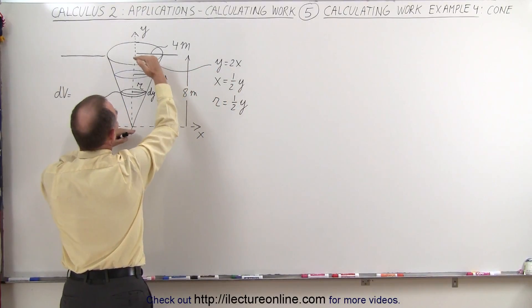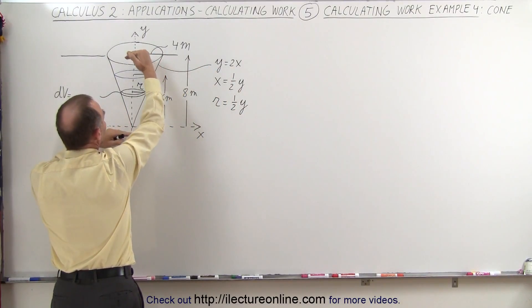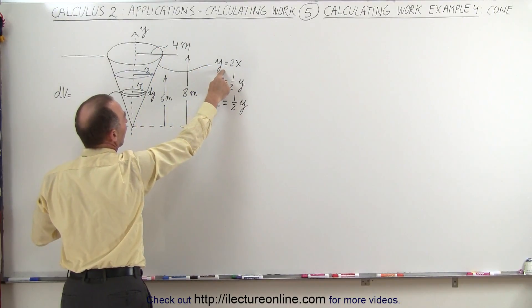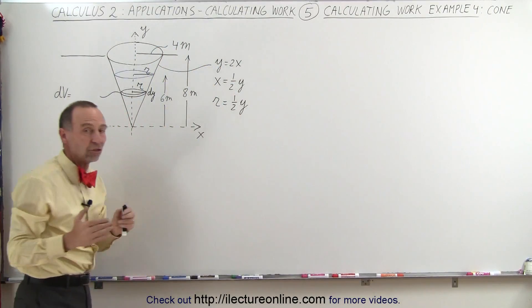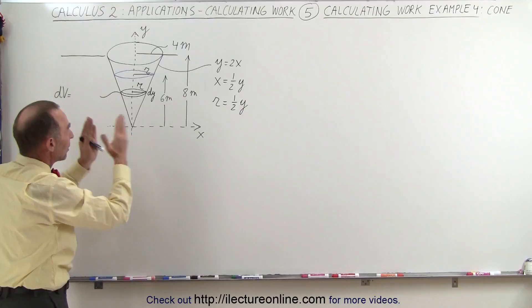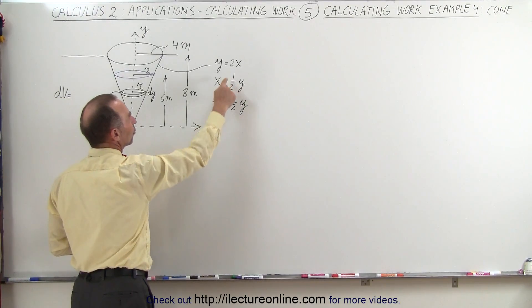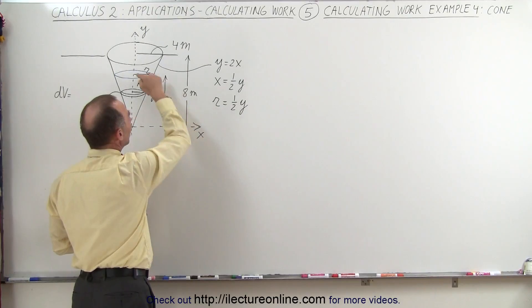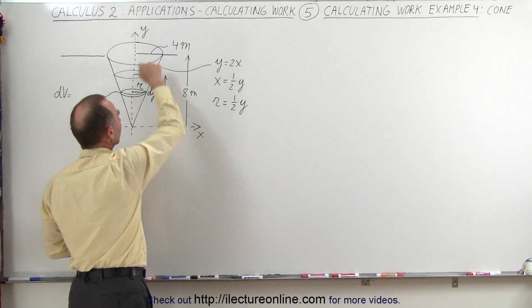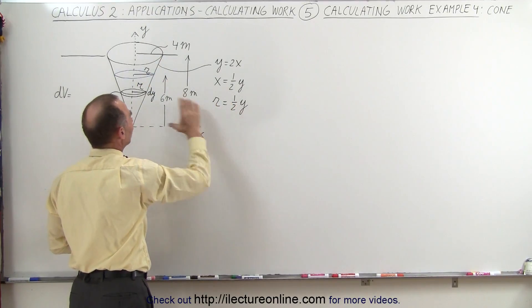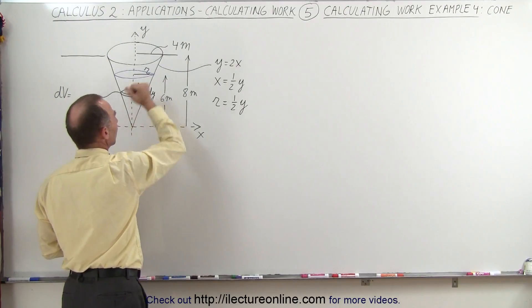In this case, the slope will be the ratio of the rise over the run that will be 8 divided by 4. Therefore, we have y equals 2x as the relationship between the height and the radius of the cone. We can solve this equation for x. x equals 1 half y. Therefore, the radius anywhere along the height of the cone is equal to 1 half the height above the ground right here.